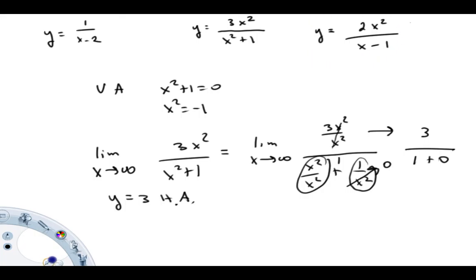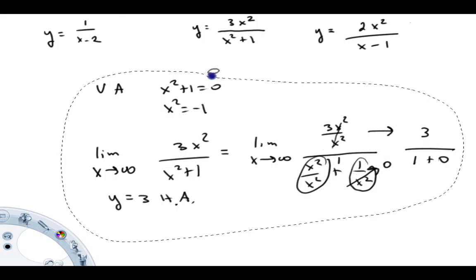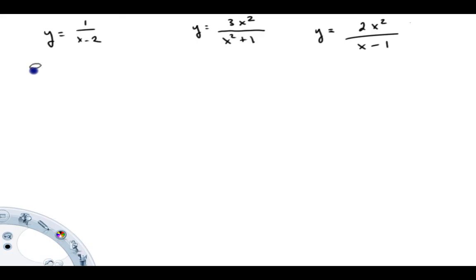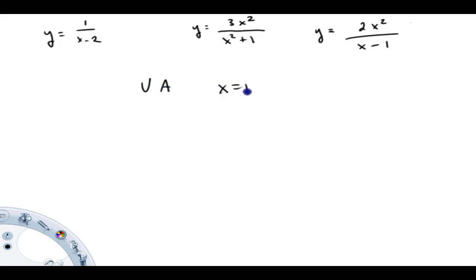Let's talk about the third example. For vertical asymptotes, this function has a vertical asymptote at x equals 1, coming from setting the denominator equal to zero and solving for x. That's a valid solution. The top of this function is one power higher in x than the bottom, therefore it will not have a horizontal asymptote — it will have a linear asymptote. This thing will converge to a line as x gets large, so it has an oblique asymptote, or what I like to call a slanter.